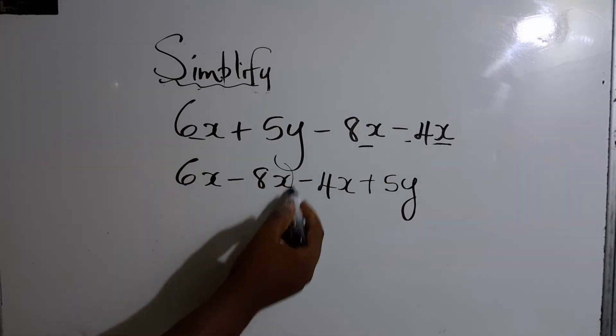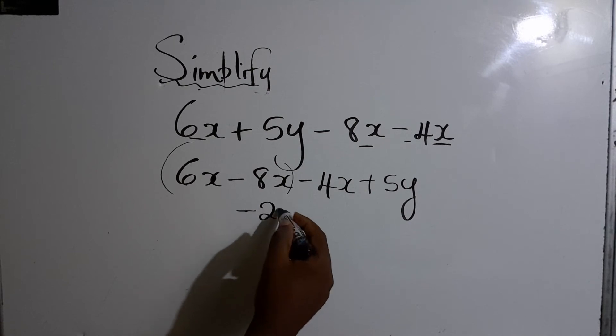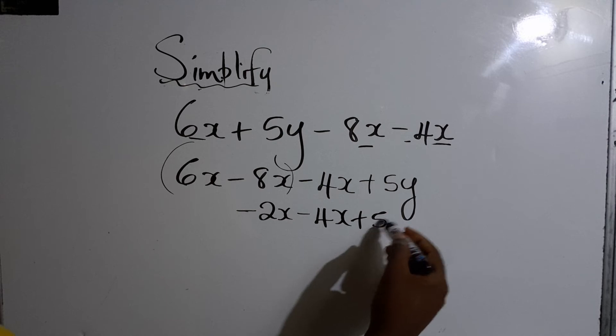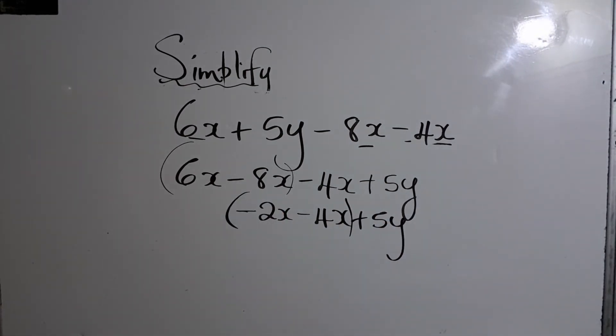And of course, let's work out this part first. 6X minus 8X. That would give us minus 2X. Since 8 is bigger. Let's work out this part.